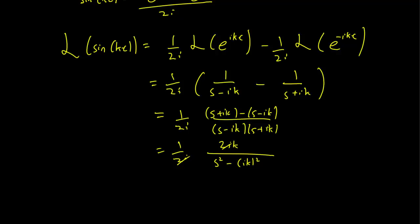The 2i's here cancel. And also, ik squared is going to be negative k squared.